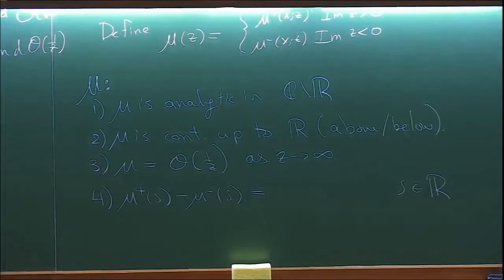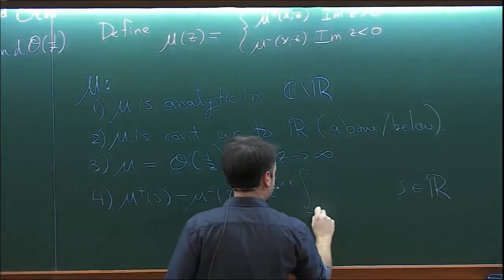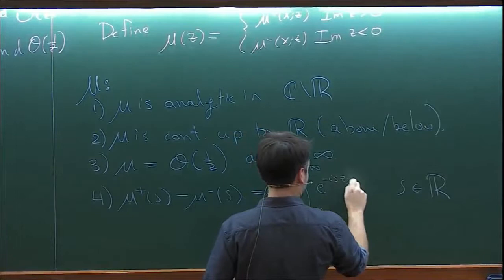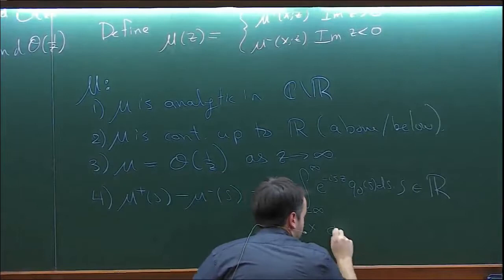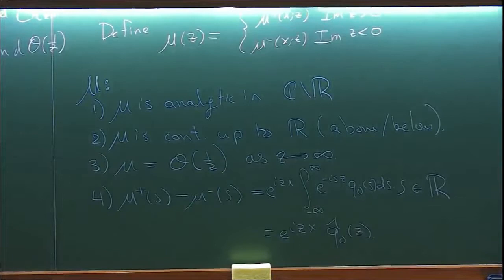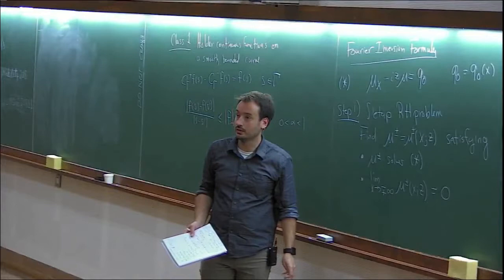Property four is the jump condition on the real axis. Taking mu plus minus mu minus, I add the two integrals and end up with the integral over all of R: e^{izx} times the integral of e^{-izs} q_0(s) ds. So the jump condition is e^{izx} times the Fourier transform of q_0. Somehow, through setting up the Riemann-Hilbert problem following the ODE, we already see the forward Fourier transform of the data on the right-hand side.